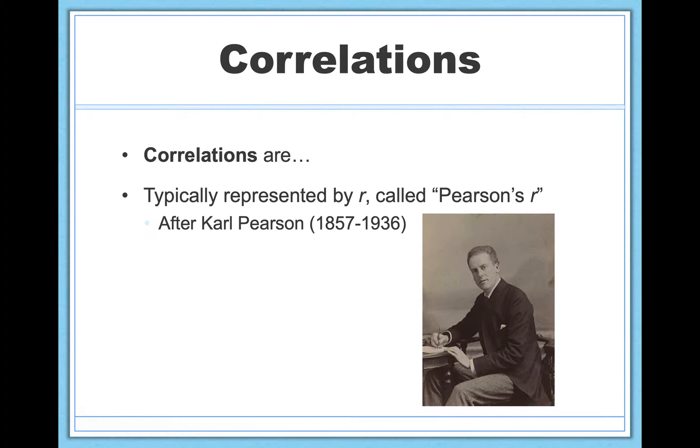So correlations are typically represented by r, called Pearson's r, named after Karl Pearson, the person who basically invented them more or less. There are other types of correlations like Spearman's rank order correlation, but those are less commonly used and they're beyond the scope of this course. So we're going to focus on Pearson's r, which is by far the most commonly used correlation in research and statistics.